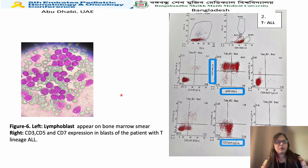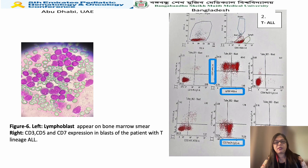This figure shows bone marrow morphological findings with lymphoblasts on the left side, and the immunophenotyping pattern shows CD3, CD7, and CD5 positive — this corresponds to T-lymphoblastic leukemia.